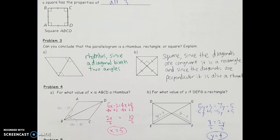To find the value of X that makes ABCD a rhombus: it's a rhombus if the diagonal bisects the corner angle, so I set the two halves equal — 6X − 2 equals 4X + 8 — and isolate for X, getting X equals 5. For the next question, to make DEFG a rectangle the diagonals must be congruent, meaning their half-segments must be equal: 5Y + 3 equals 7Y − 5. Solving for Y gives Y equals 4.